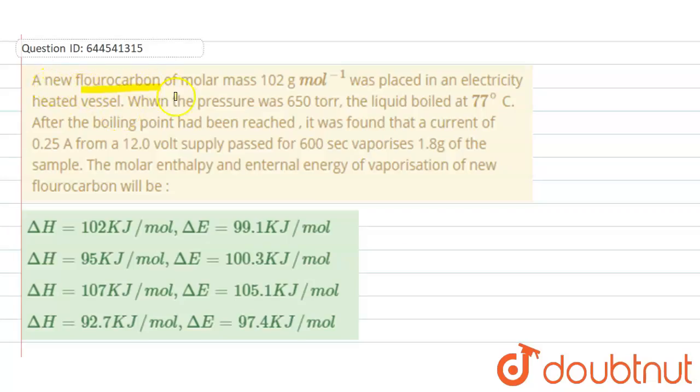A new fluorocarbon of molar mass 102 grams per mole was placed in an electricity heated vessel. When the pressure at 650 torr, the liquid boiled at 77 degrees Celsius. After the boiling point had been reached,